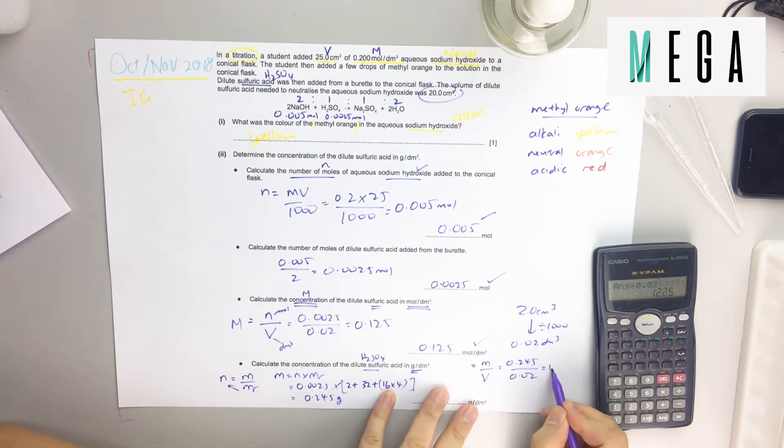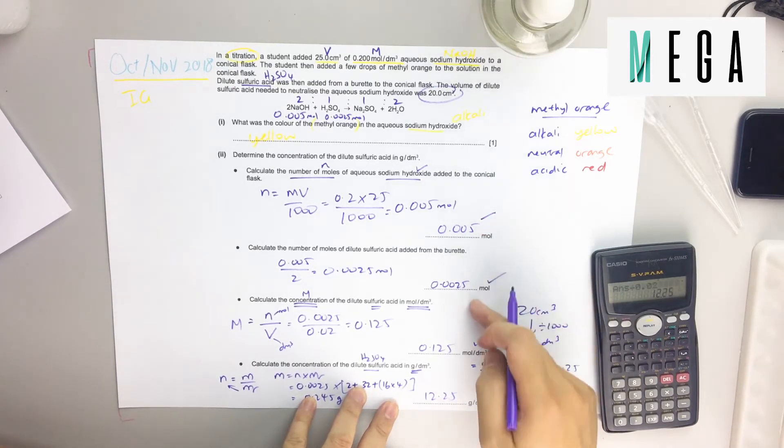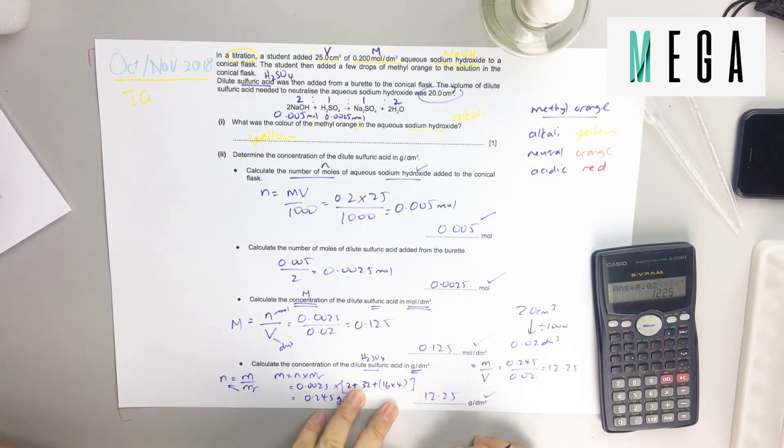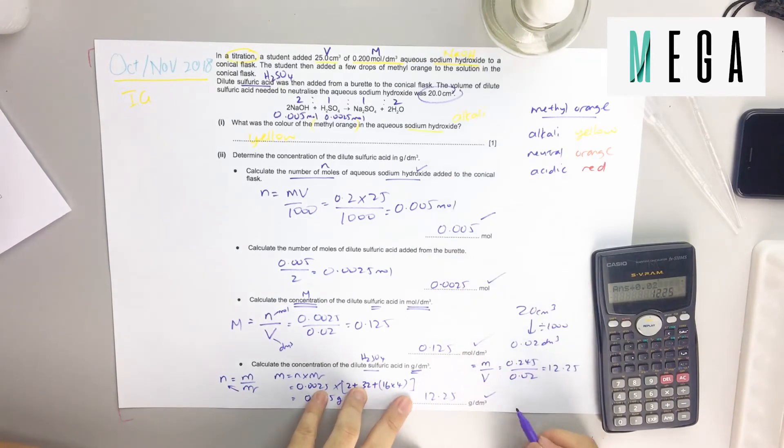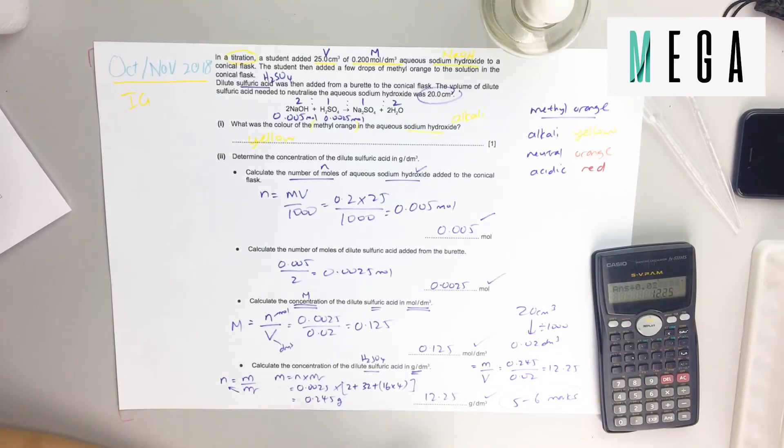You have it at 12.25 grams per dm³. These are the more popular questions. The whole thing will be about 5 to 6 marks. It's not very difficult. Done.